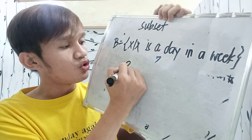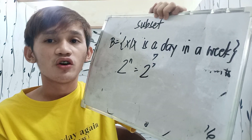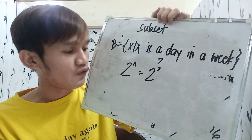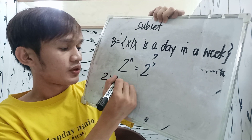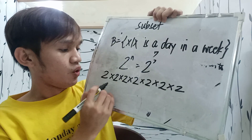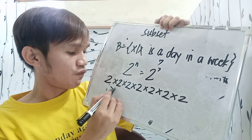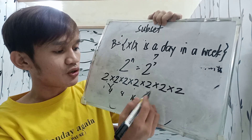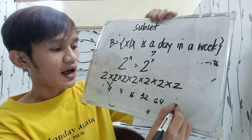Using the formula 2 raised to N, this means 2 raised to 7, or 2 raised to the 7th power. You multiply 2 by itself 7 times: 2×2×2×2×2×2×2. So: 2×2=4, 4×2=8, 8×2=16, 16×2=32, 32×2=64, and 64×2=128.